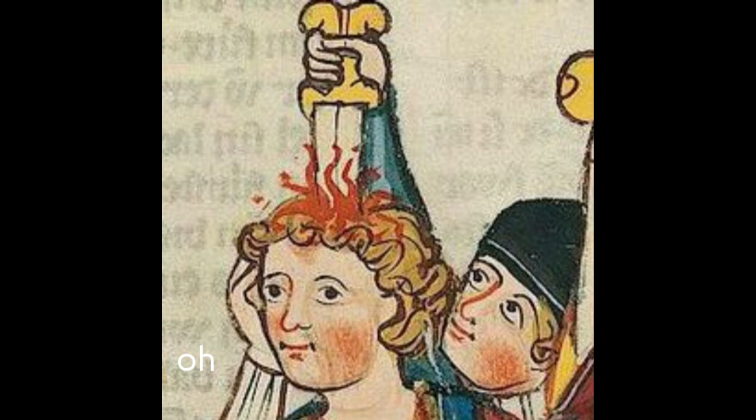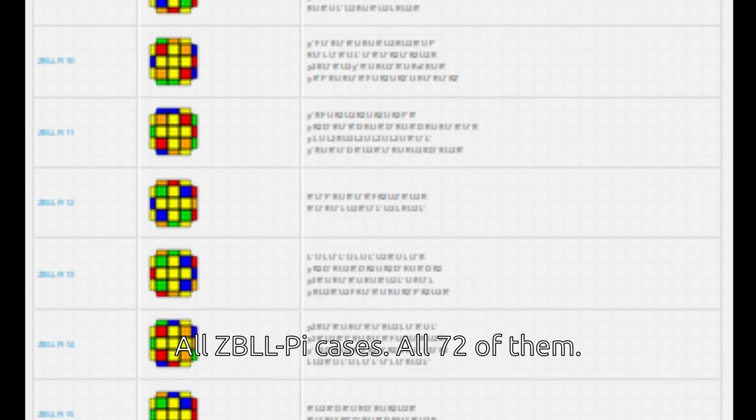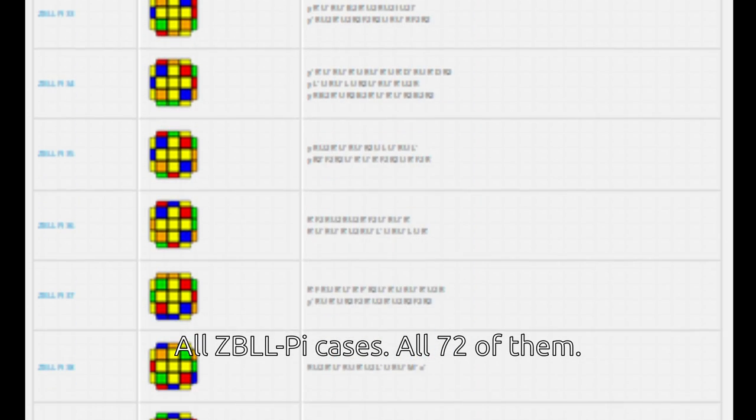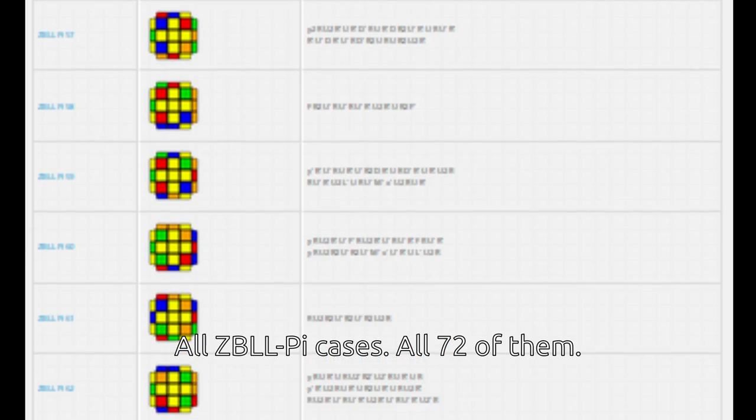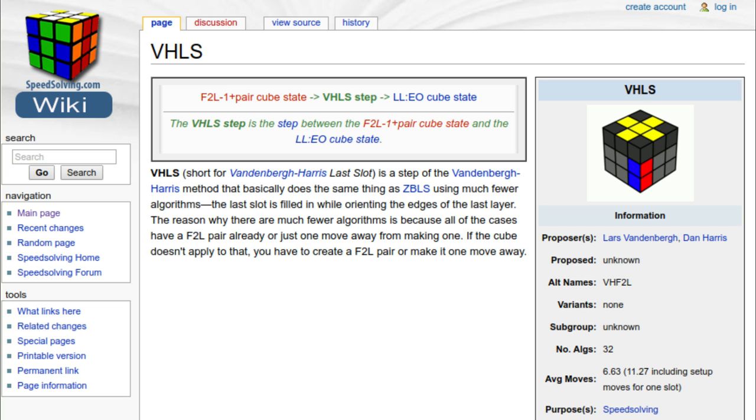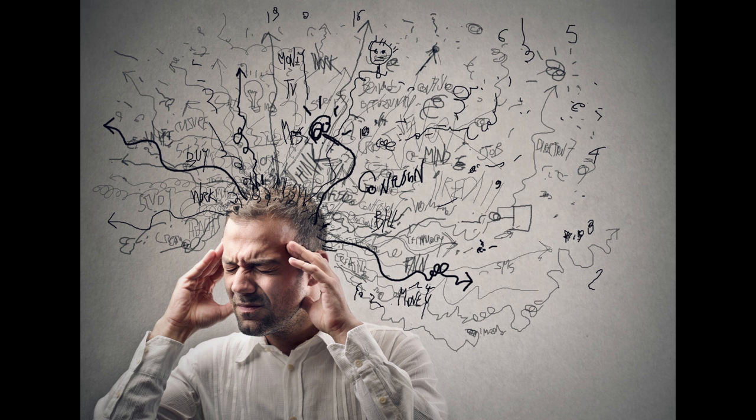Then, of course, people realized the major downside to the method. The last step consists of a massive 493 cases, a lot of which look extremely similar to each other. While the first part of ZB could be done semi-intuitively in some parts, this was just too much.